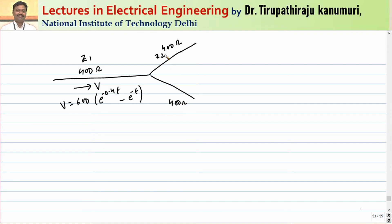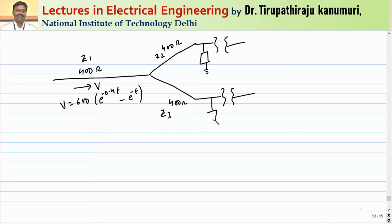Let us label the impedances of the two bifurcated lines as Z2 and Z3. Both lines are connected to a feeder transformer, which is protected by a surge arrestor with characteristic impedance of 50 ohms — let us take it as Z4. The transformer has an impedance of Z = infinite, which means this is equivalent to an open-circuited line.